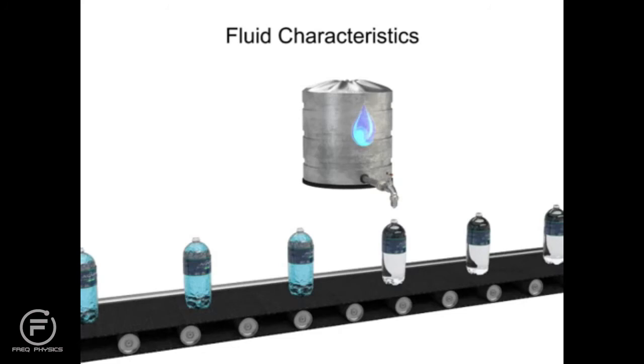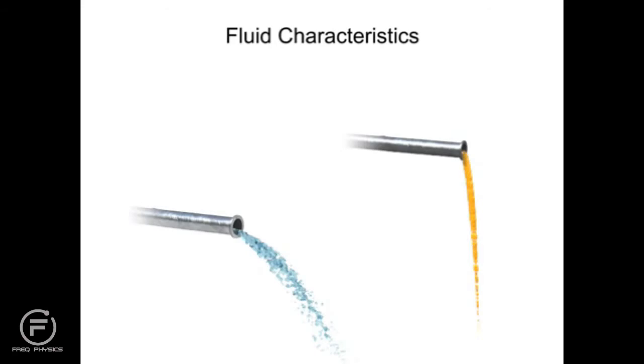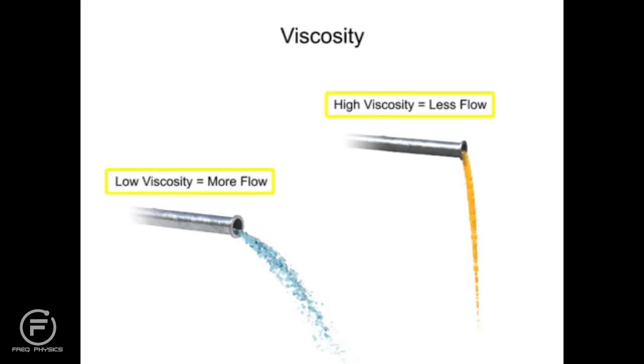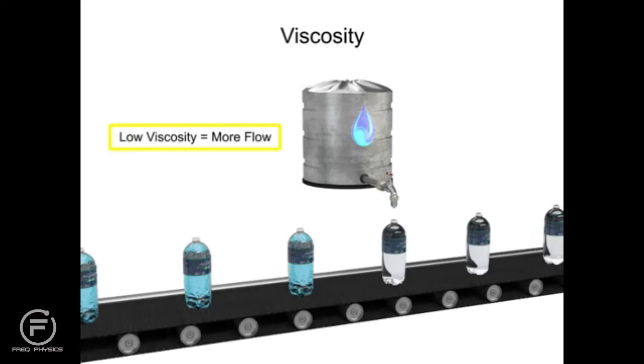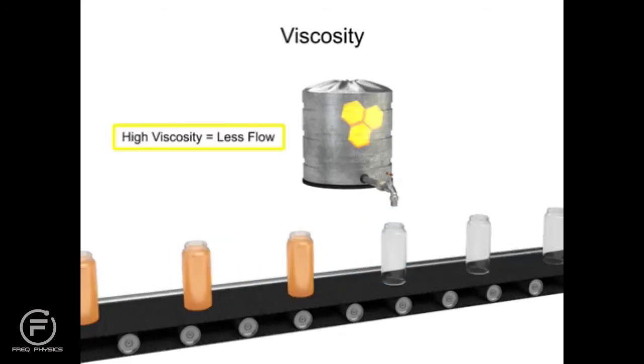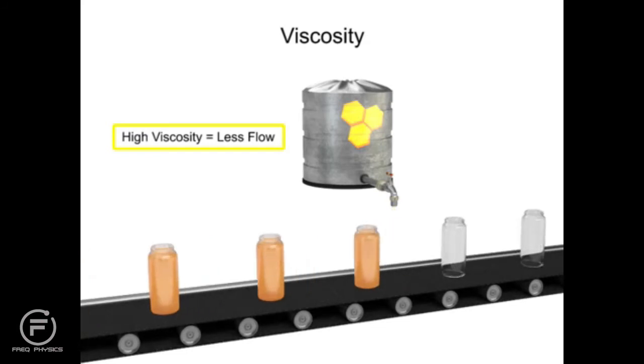Fluids used in mechanical systems come in many different types. The type of fluid chosen for a particular application depends on its characteristics. One of the most important characteristics of a fluid is its viscosity. Viscosity is defined as a fluid's resistance to flow. Fluids with low viscosity flow very easily. Water is a type of fluid with low viscosity. Fluids with high viscosity are more resistant to flow. Honey is a type of fluid with a high viscosity. Therefore, honey is more viscous than water.